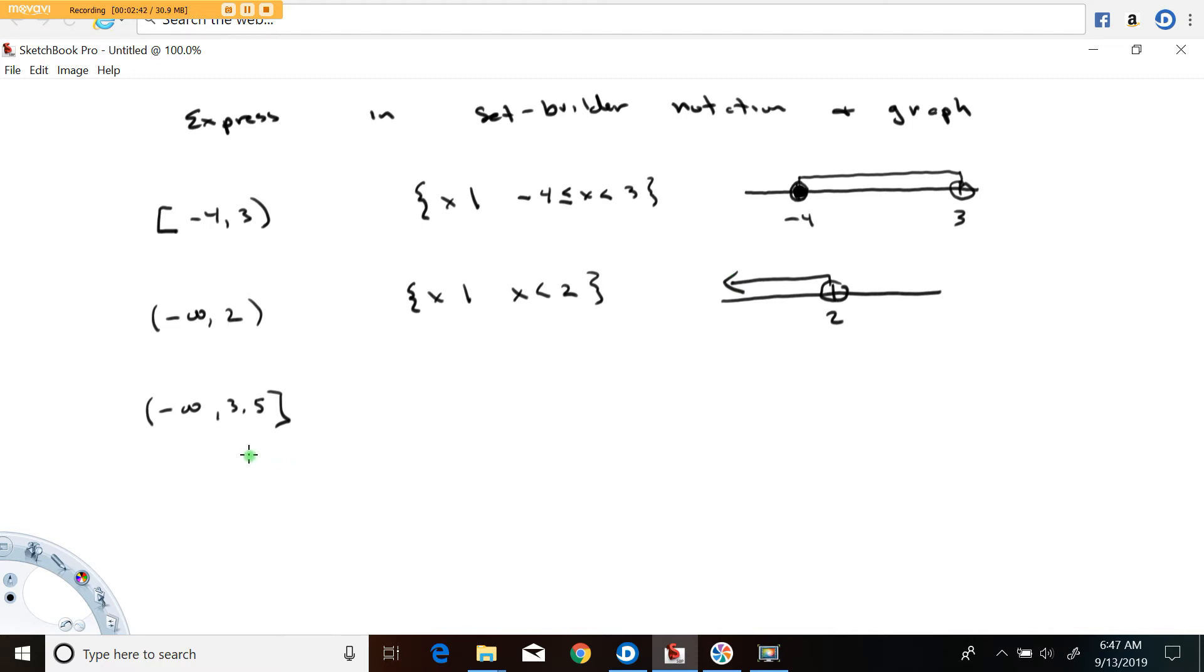Alright, let's take a look at this one. So this is the set of numbers from 3.5 to the left, including the 3.5 because of the hard bracket. So set of all x such that x is less than or equal to 3.5. The equality here is because that's a hard bracket.